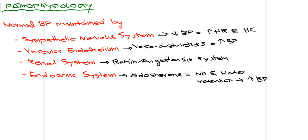Regarding pathophysiology, normal blood pressure is maintained by four processes: the sympathetic nervous system, vascular endothelium, the renal system, and the endocrine system. The sympathetic nervous system detects decreased blood pressure and releases hormones that increase heart rate and contractility. The vascular endothelium releases vasoconstrictors such as nitric oxide and endothelin when blood pressure drops, leading to an increase in blood pressure.